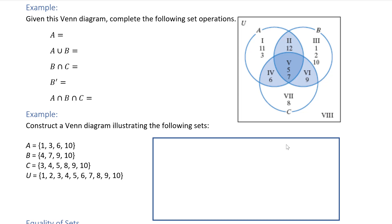For this next example we're given this Venn diagram and asked to complete the following operations. The capital letters A, B, C are the sets; the Roman numerals 1 through 8 are the regions; and the numbers are the elements. When I ask for set A in roster notation, I list every single number in set A — the entire circle — so that's 11, 3, 12, 5, 7, and 6. You could write those in any order as long as you get all the elements.